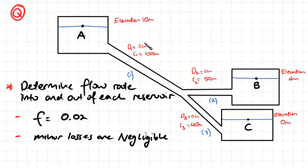Each pipe here has the same diameter of 0.1 meters but different lengths: 100 meters, 50 meters, and 40 meters. They've also got different elevations. The first thing we need to do is work out where the flow is going. It's obviously going out of A, but the question is...